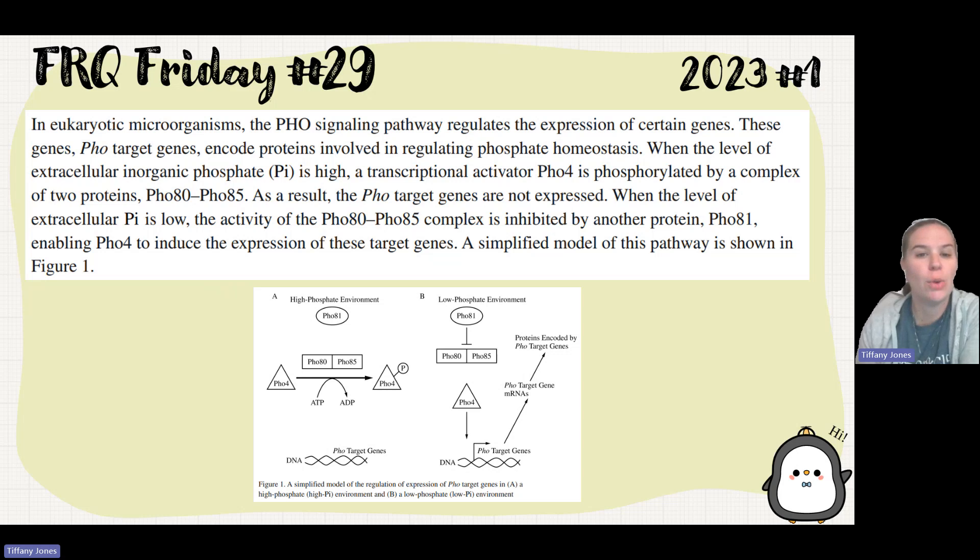In eukaryotic microorganisms, the PHO signaling pathway regulates the expression of certain genes. These PHO target genes encode proteins involved in regulating phosphate homeostasis. When the level of extracellular inorganic phosphate is high, a transcriptional activator PHO4 is phosphorylated by a complex of two proteins, PHO80 and PHO85. As a result, the PHO target genes are not expressed. When the level of extracellular phosphate is low, the activity of the PHO80-85 complex is inhibited by another protein, PHO81, enabling PHO4 to induce the expression of these target genes. A simplified model of this pathway is shown in the figure.